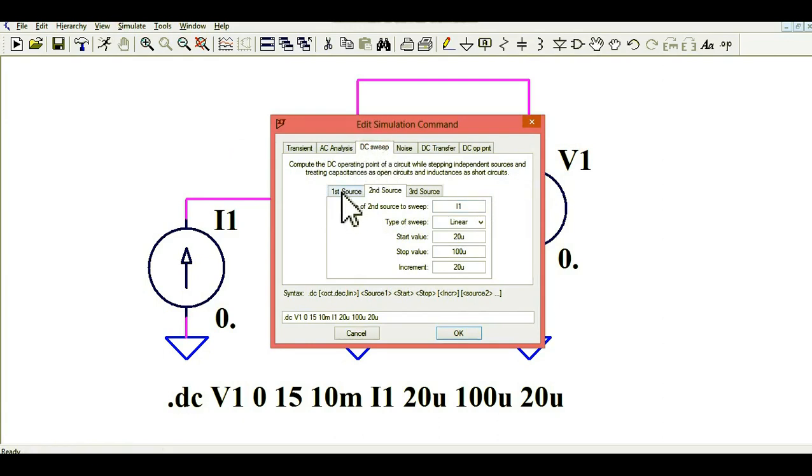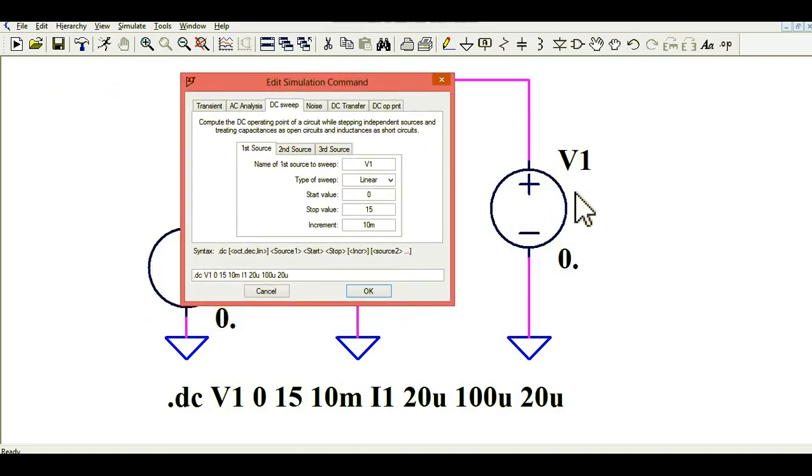This is DC sweep and our first source is V1. The type of sweep is linear. Start value 0, stop value 15 volt and the increment of 10 millivolt.